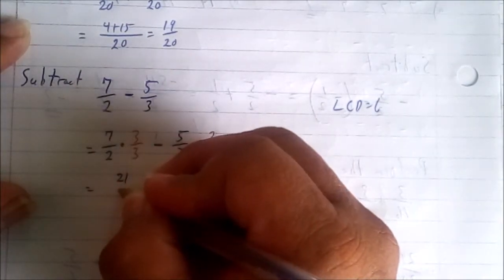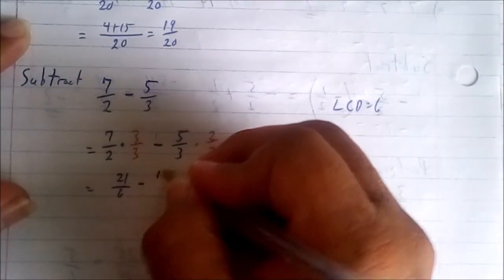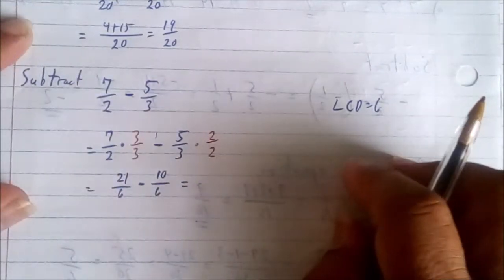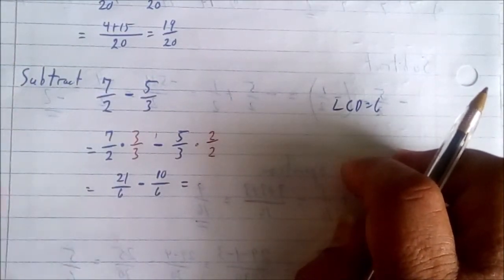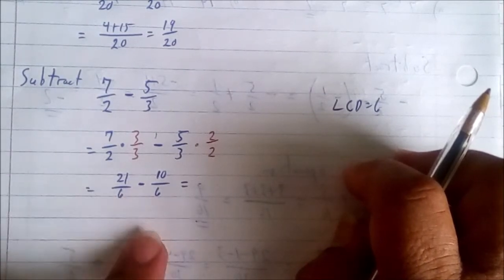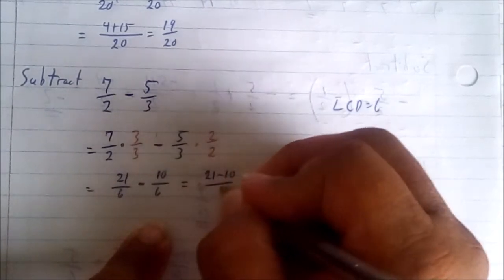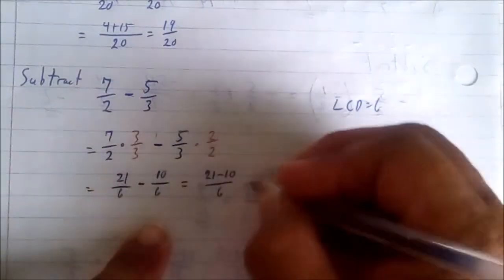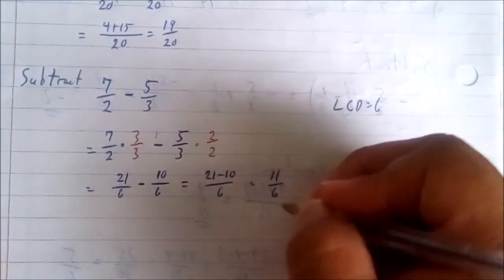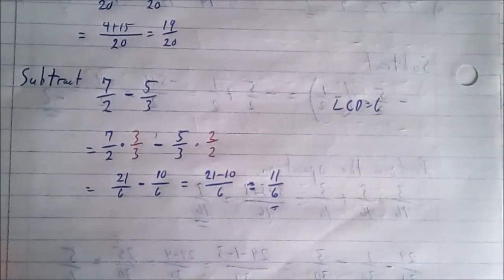So when we multiply this out we end up with seven times three is twenty one, two times three you get six, minus five times two is ten, three times two is six. Now don't worry about the bigger number at the top, that's not the point. The point is that you're getting them to equal the like denominators. So now we say 21 take away 10 over 6, keep the denominator, which is then 11 over 6.